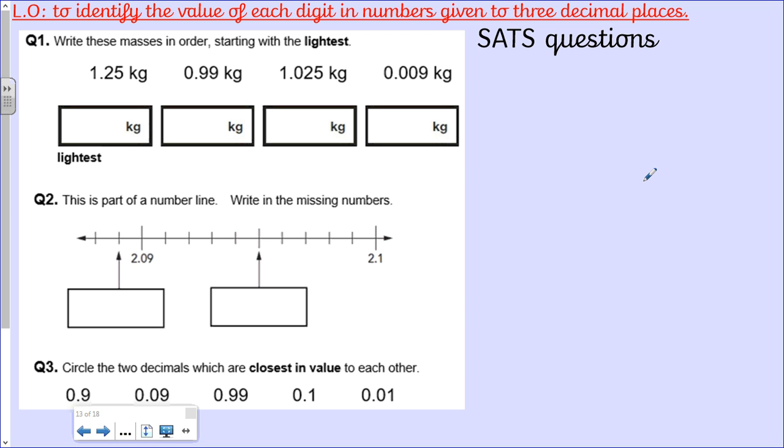SATs questions all about our decimal place value. This one is writing the masses in order starting with the lightest. Think about what that means. Are you going to put the smallest number here or the largest number here? Have a think about that before you do it.